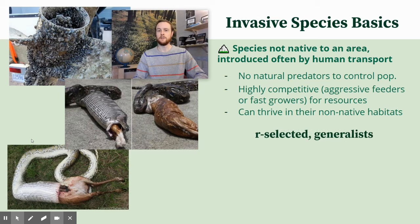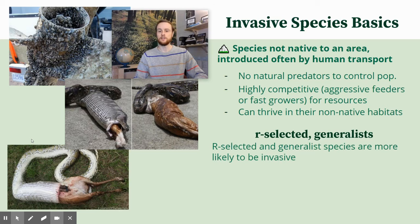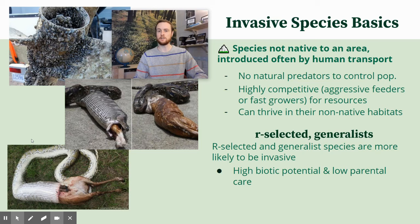Typically invasive species will fall into the r-selected or generalist category — those are different categories, and they're oftentimes one or the other or both. r-selected species are more likely to be rapid reproducers with a higher biotic potential, making them prone to becoming invasive. They reproduce rapidly in a new ecosystem typically without control from predators or competing species, which enables them to rapidly take over.